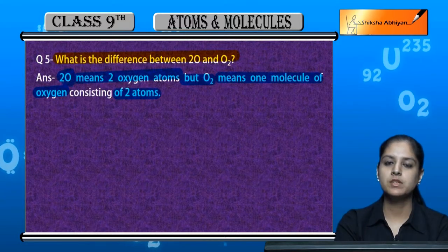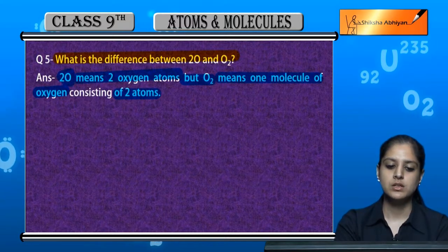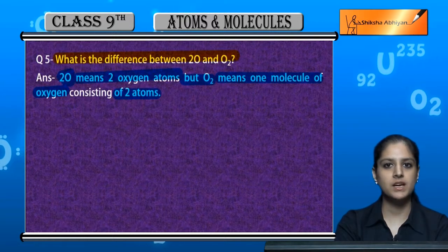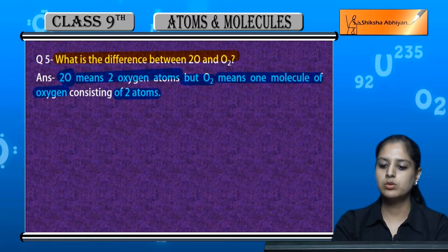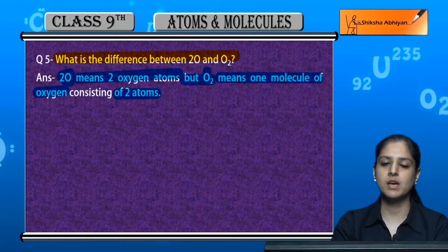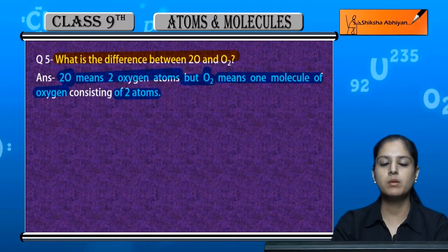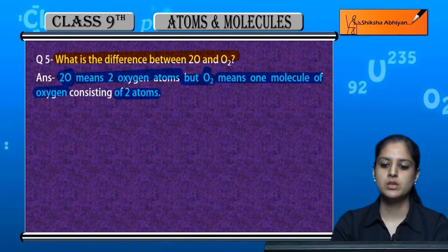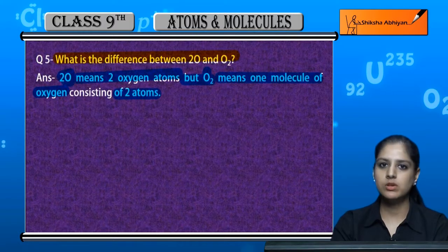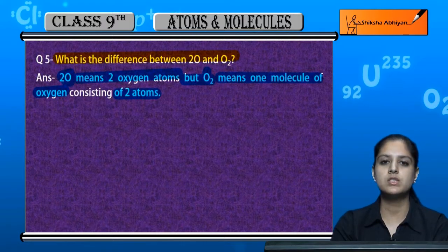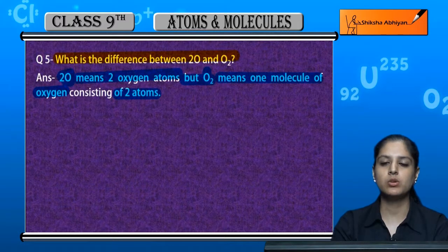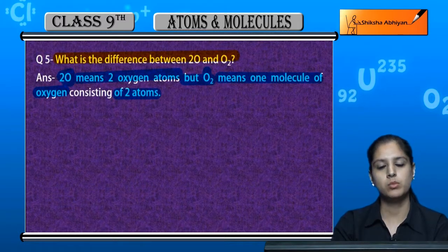2O atoms are separate and not combined. So we don't call 2O a molecule. But O2 we call one molecule, where the same element is chemically combined and forms a molecule.